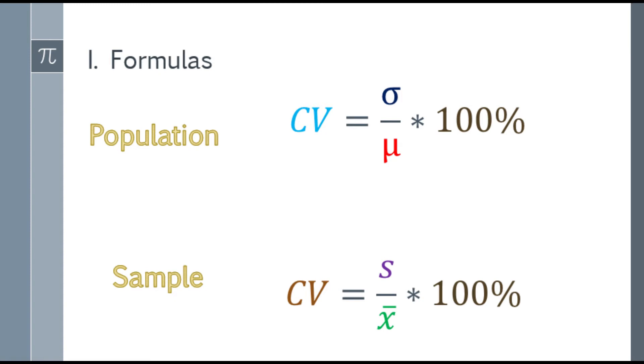Same thing with the sample. For the sample, you use the standard deviation of the sample, and in the denominator, that will be the sample mean. And you multiply it by 100% to get the answer.